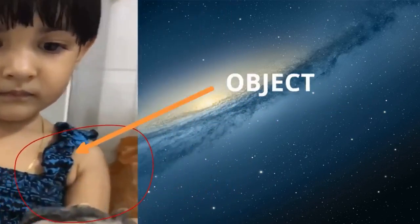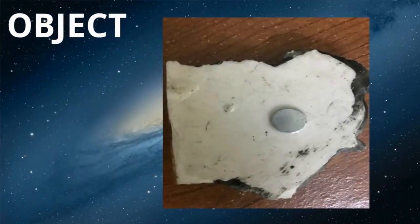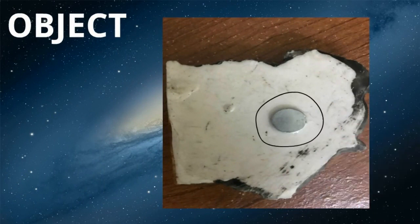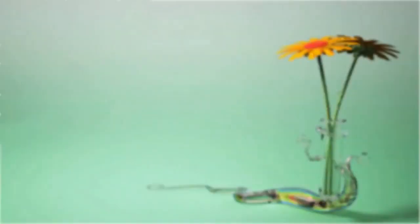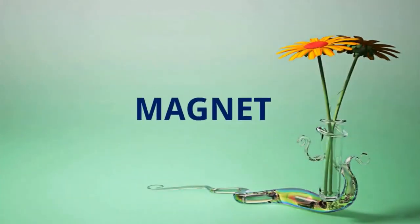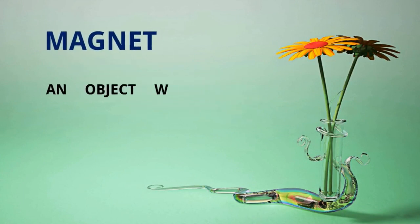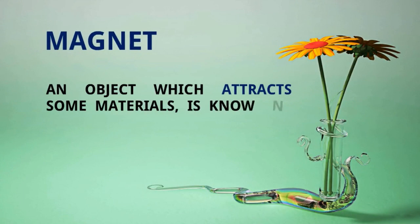If you see closely, then this is an object which attracts other objects and we all know what it is called since our childhood. It is nothing but magnet. So an object which attracts some materials is known as magnet.